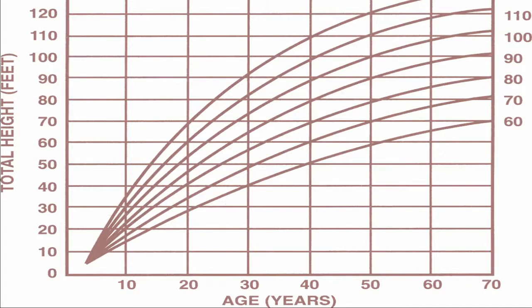When we get total tree height, we can use that to determine site index. We have charts that show, based on the height of the tree and the age, what the site index of that site is. Site index is measured in 50 years — it's an average of how tall a tree would be expected to get.